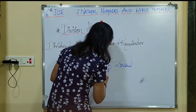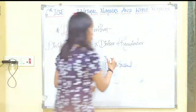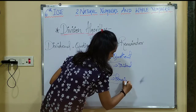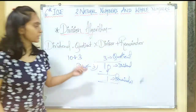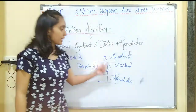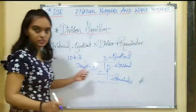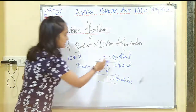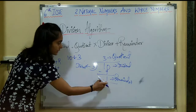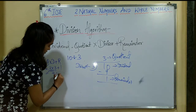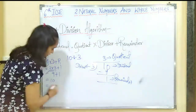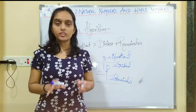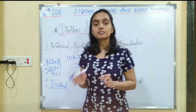Here the quotient is 3 and the remainder is 1. The division algorithm states that when the quotient is multiplied by the divisor and then added with the remainder, you get the dividend as the answer. So for this sum: quotient multiplied by divisor plus remainder equals the dividend — 3 multiplied by 3 plus 1 equals 9 plus 1, which equals 10. So 10 is your dividend and we have verified the division algorithm.